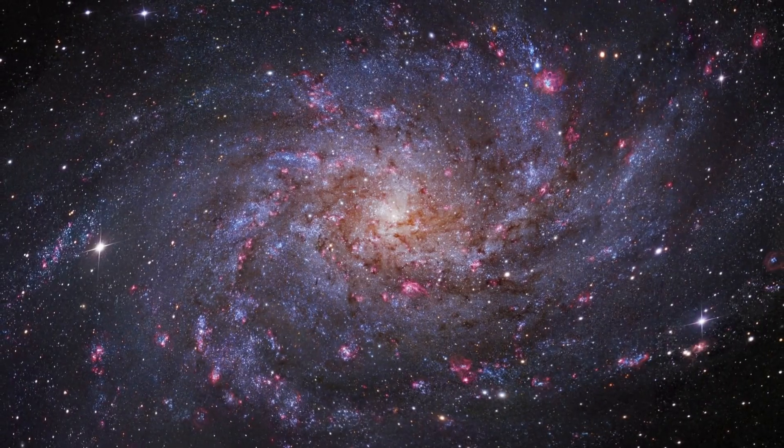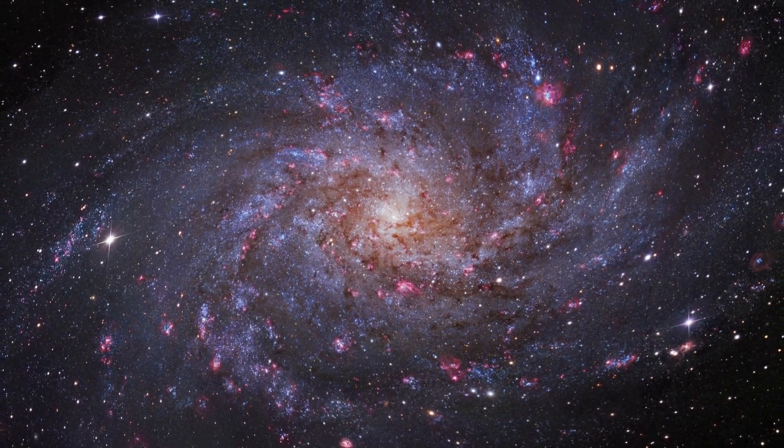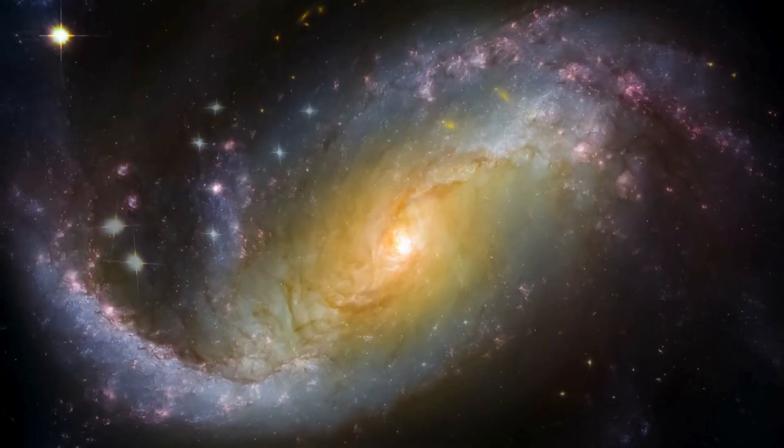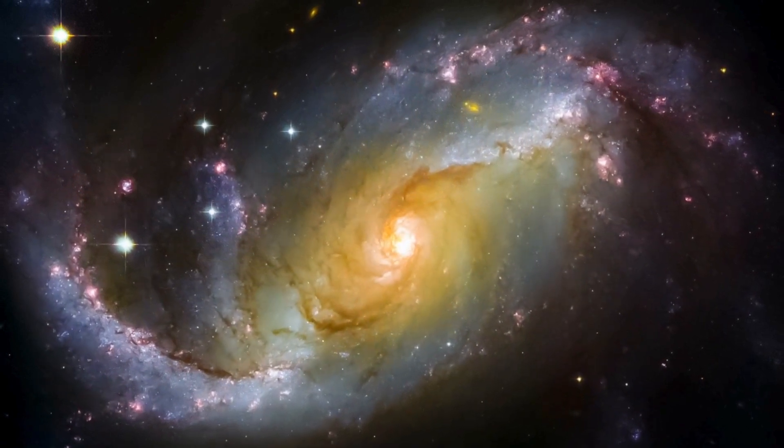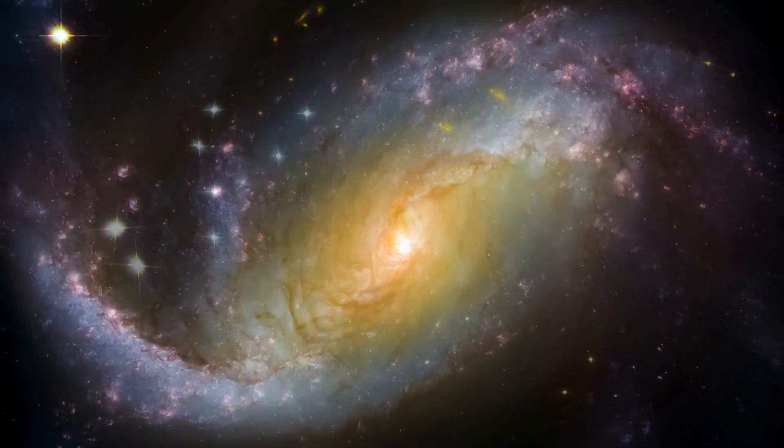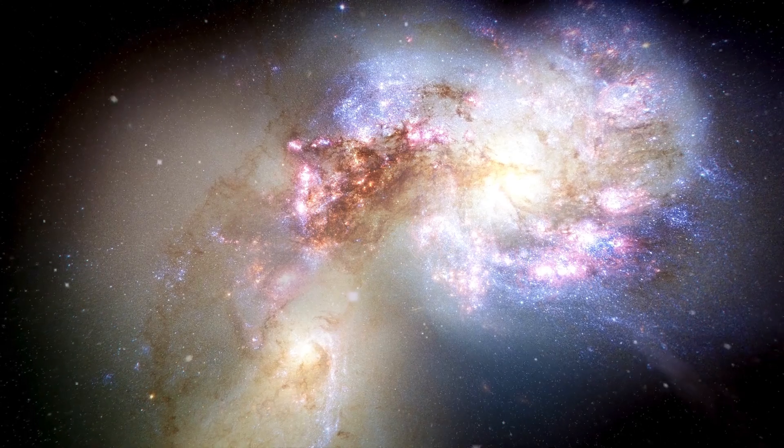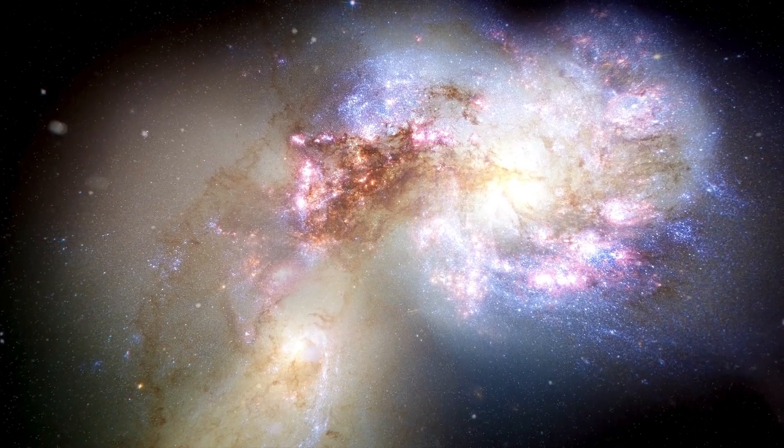Supermassive black holes are believed to be common in the centers of galaxies, including our own Milky Way. As a result, they play a crucial role in the evolution and dynamics of galaxies. When matter, such as gas and stars, gets too close to a supermassive black hole, it forms an accretion disk around it.